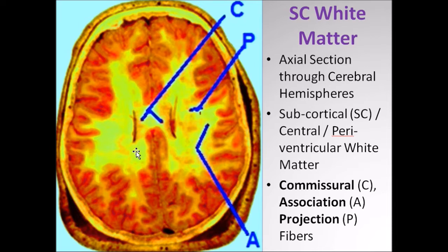For the ease of understanding, this white matter has been divided into three broad groups: the so-called commissural fibers, the projection fibers, and association fibers.